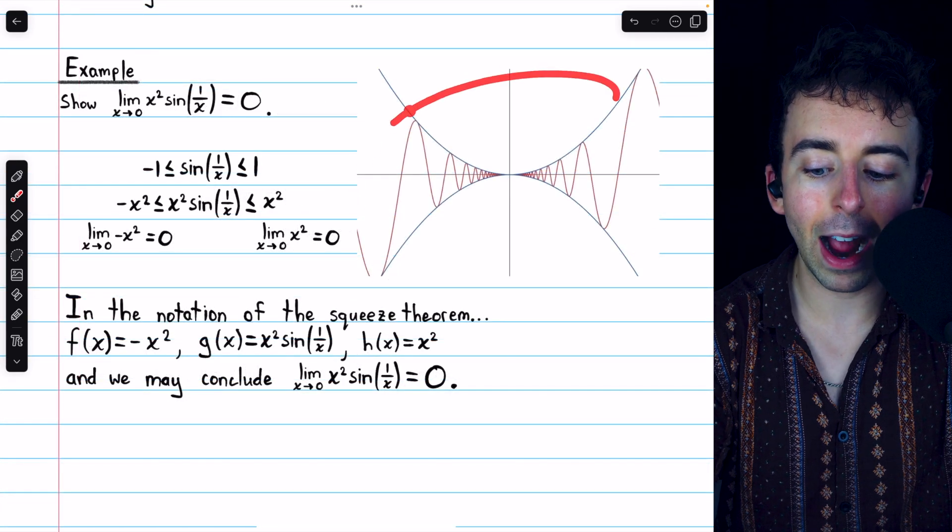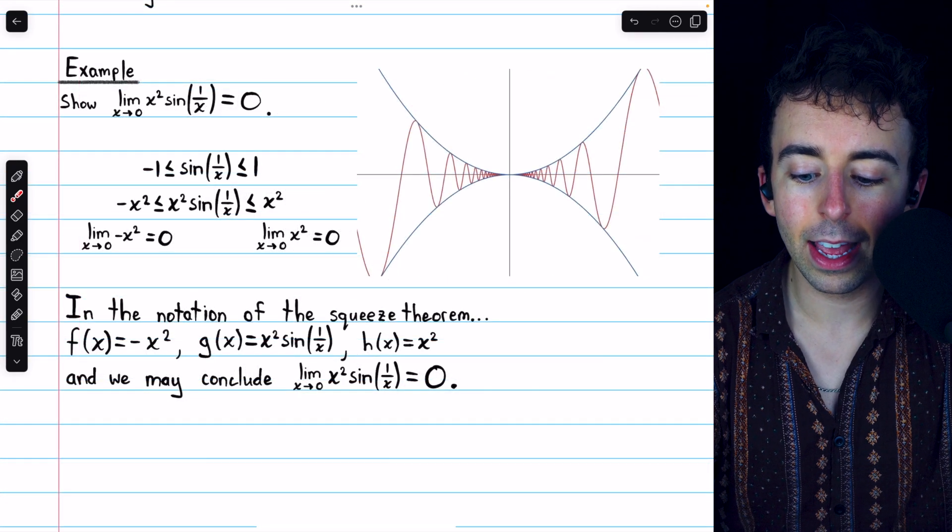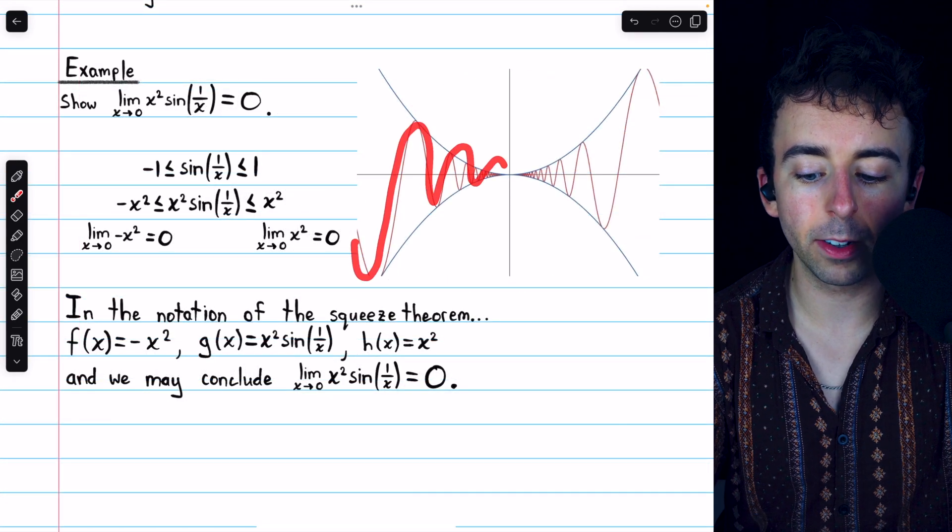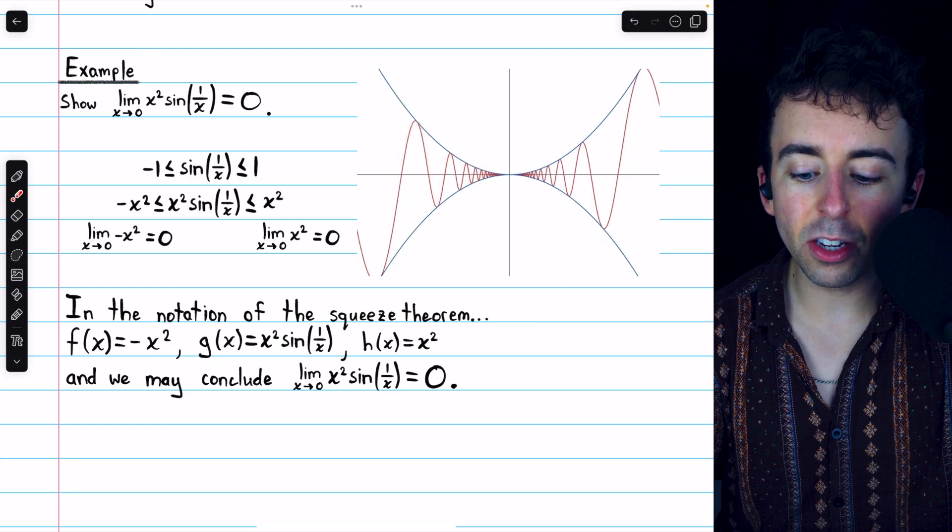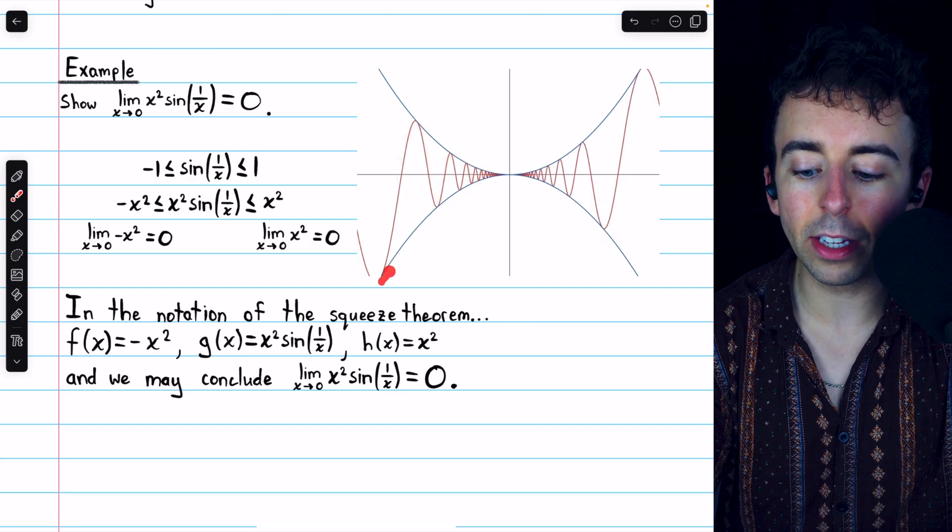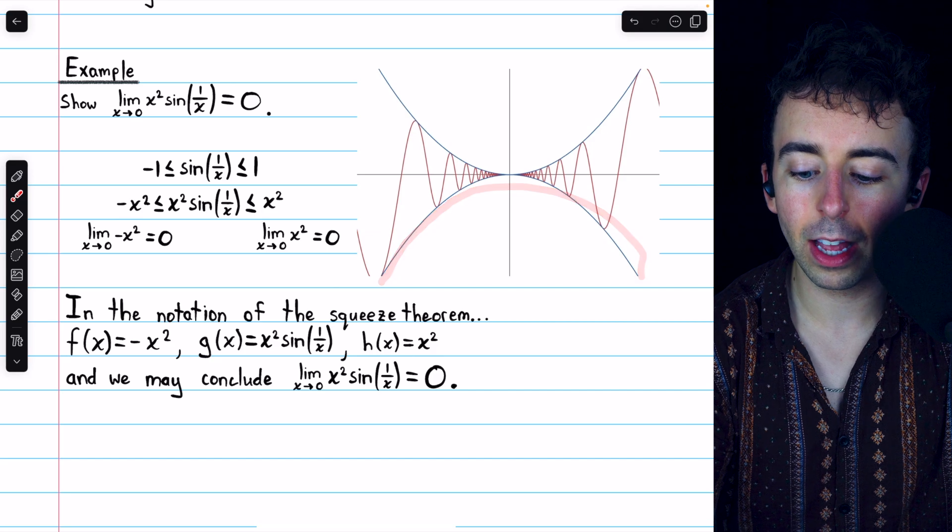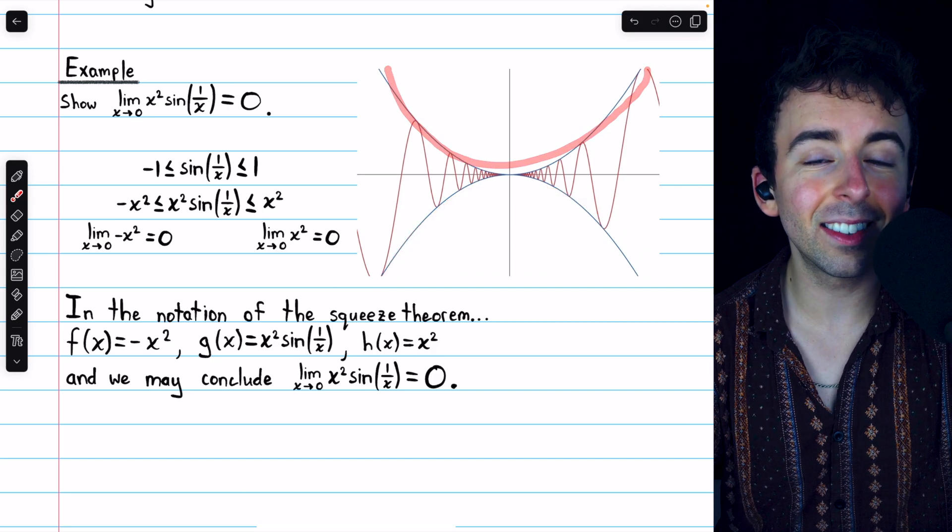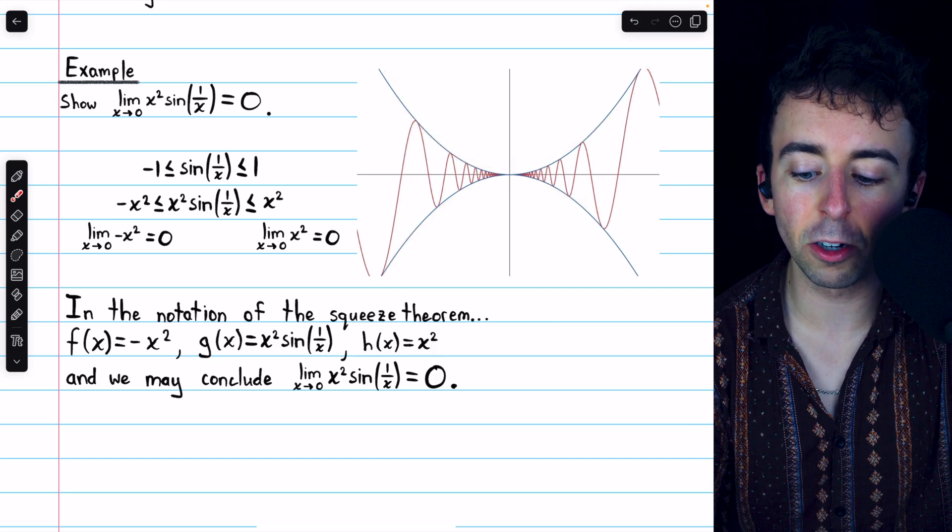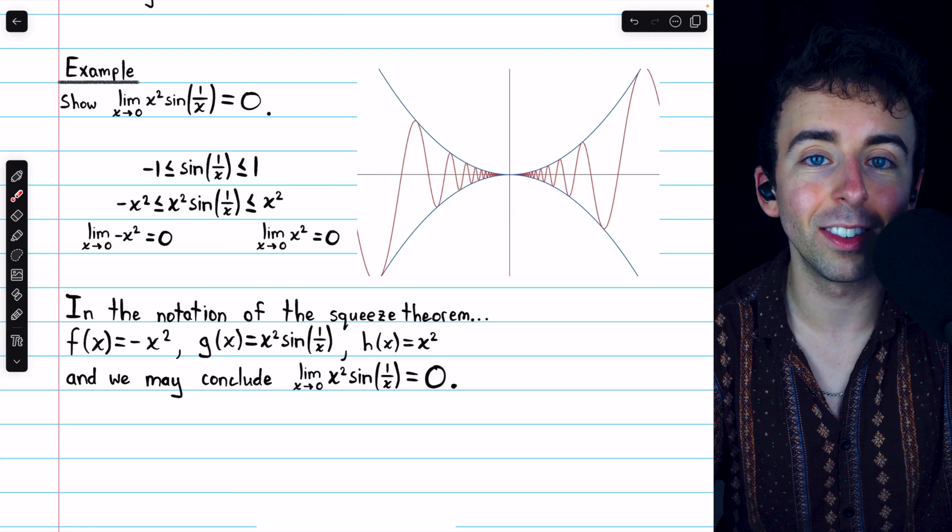This is a graph of the three functions at play. In red, we have x² times sin(1/x), and you can see how nicely it's squeezed between -x² and positive x², and it's clear they're all approaching 0 as x approaches 0.